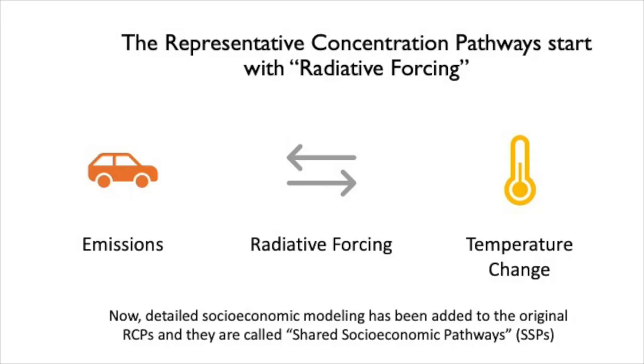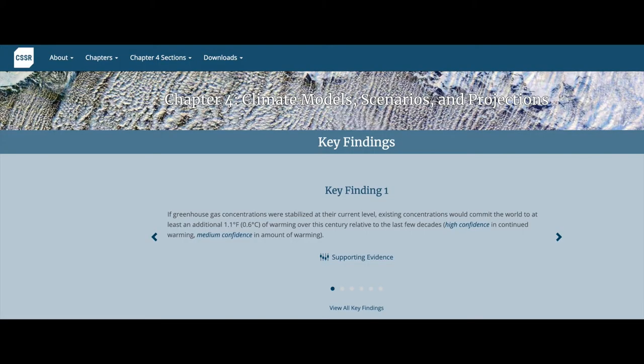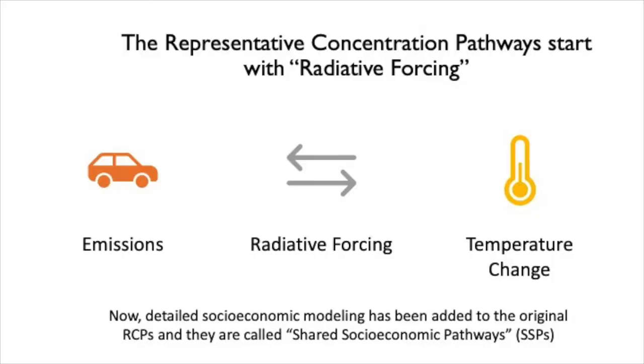Let me unpack the scenarios briefly. If you want more detail, I'd recommend chapter four of the first volume of the National Climate Assessment, which I was the lead author on. The RCP scenarios — which stands for Representative Concentration Pathways — are nowadays actually called SSPs, Shared Socioeconomic Pathways, but they have the same radiative forcing associated with them as RCPs.